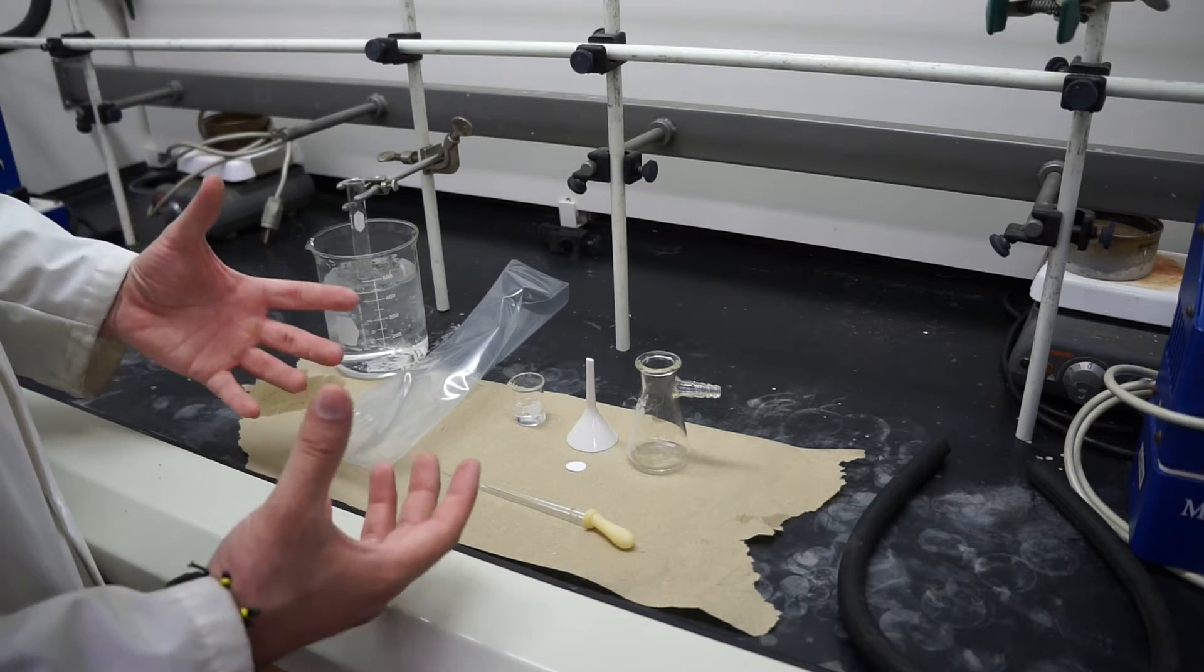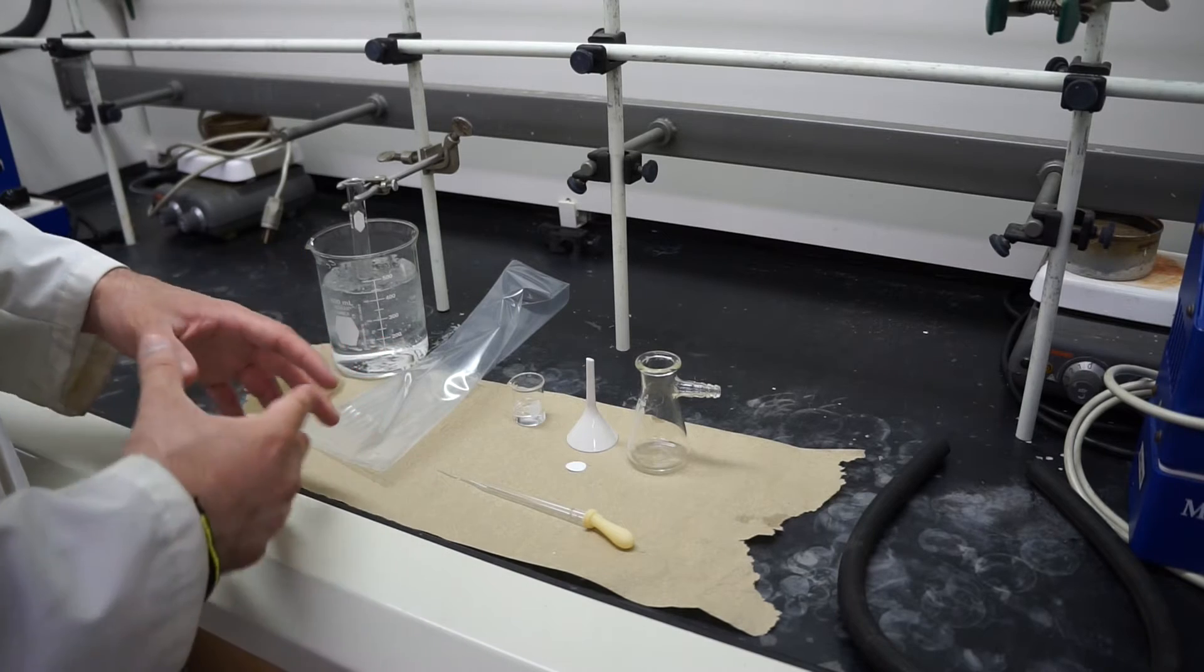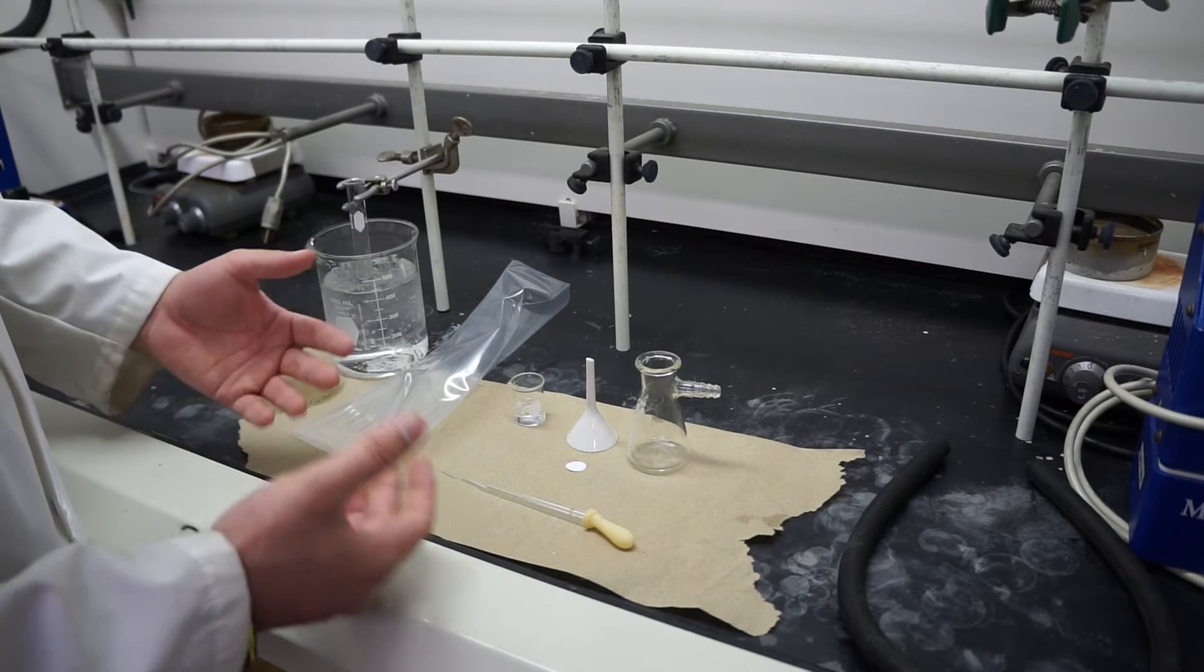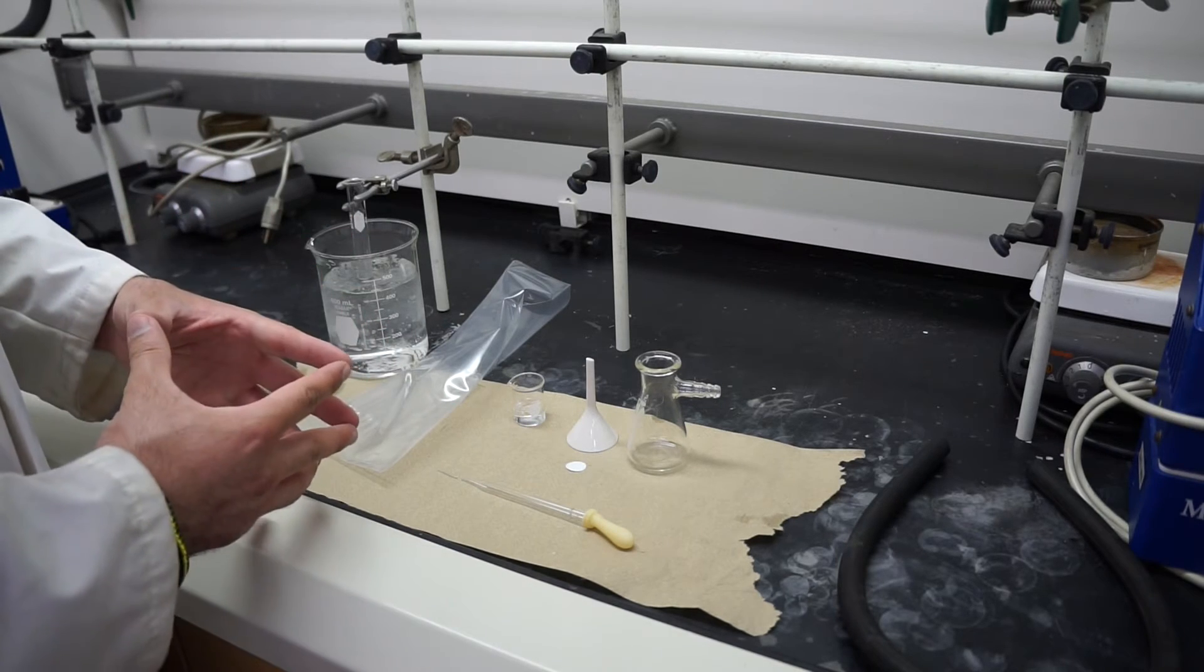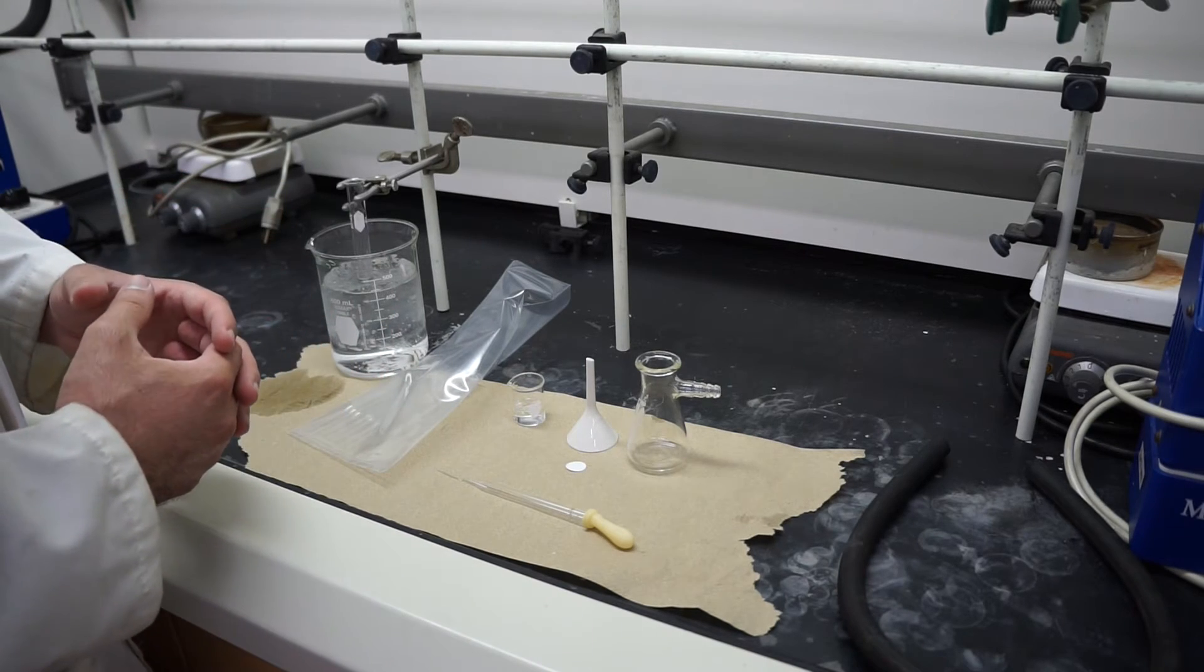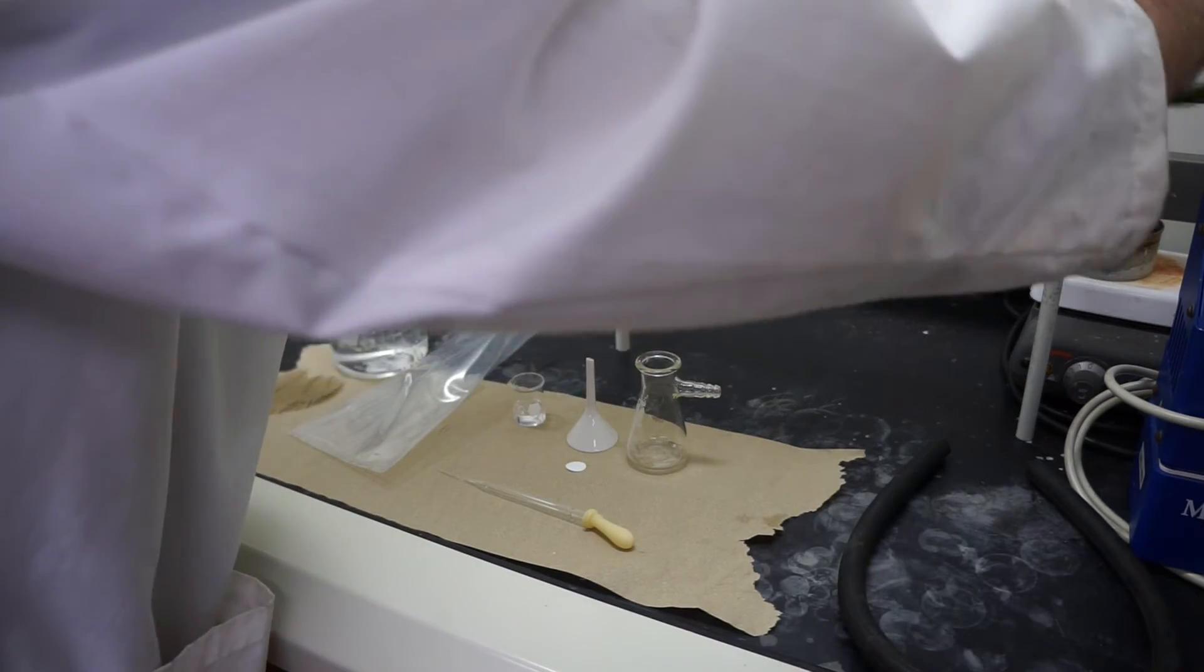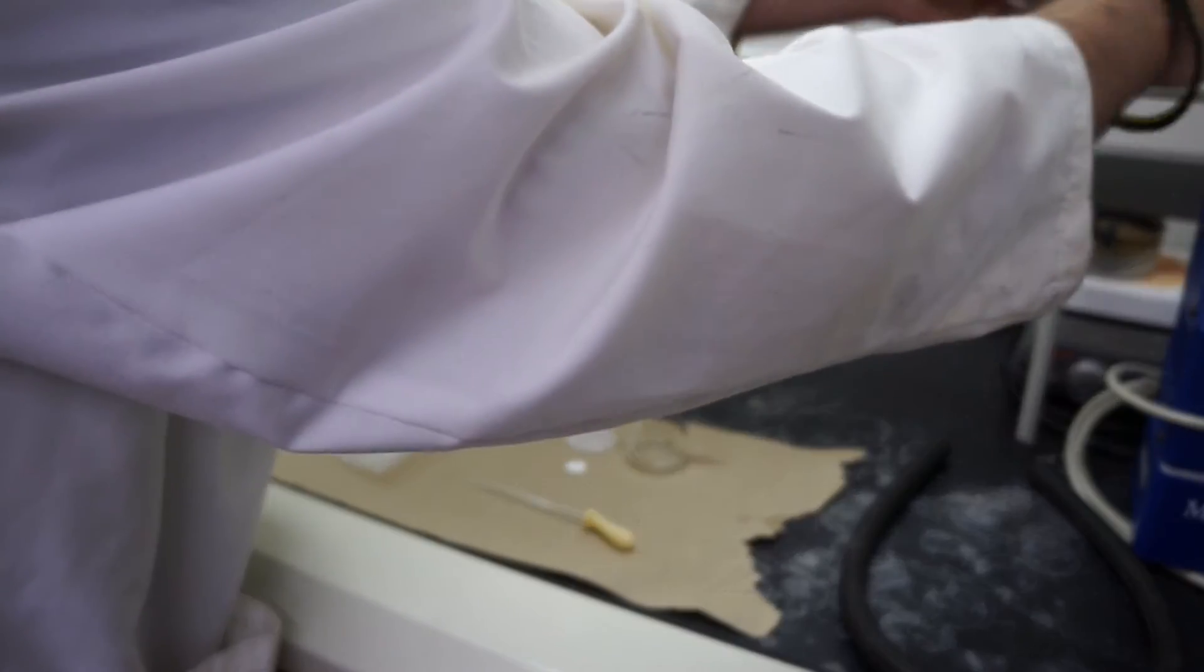With the cold temperature what we're doing is we're reducing the solubility of our crystals, making them come out of solution and crash out and the crystallization should form. After that 10 minutes you are going to do a Hirsch filtration. So we'll go ahead and set up our Hirsch filtration.